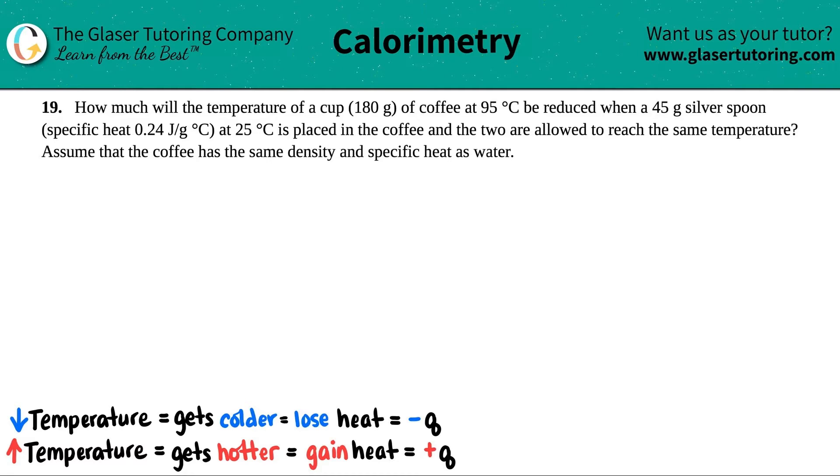Number 19, how much will the temperature of a cup, which is 180 grams of coffee at 95 degrees Celsius, be reduced when 45 grams of a silver spoon, which has a specific heat of 0.24 joules per gram degree Celsius at 25 degrees Celsius, is placed in the coffee and the two are allowed to reach the same temp. Assume that the coffee has the same density and the specific heat as water.